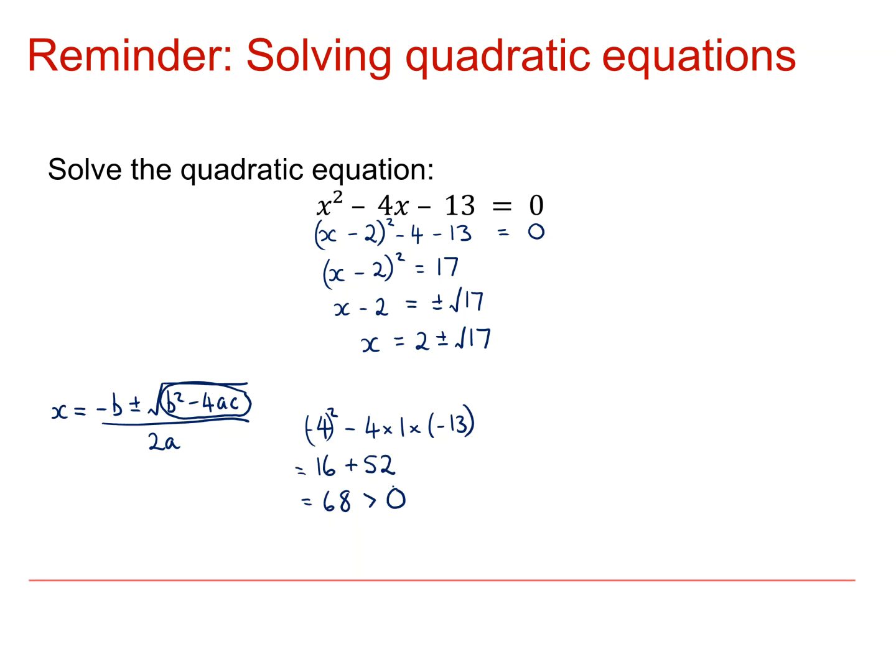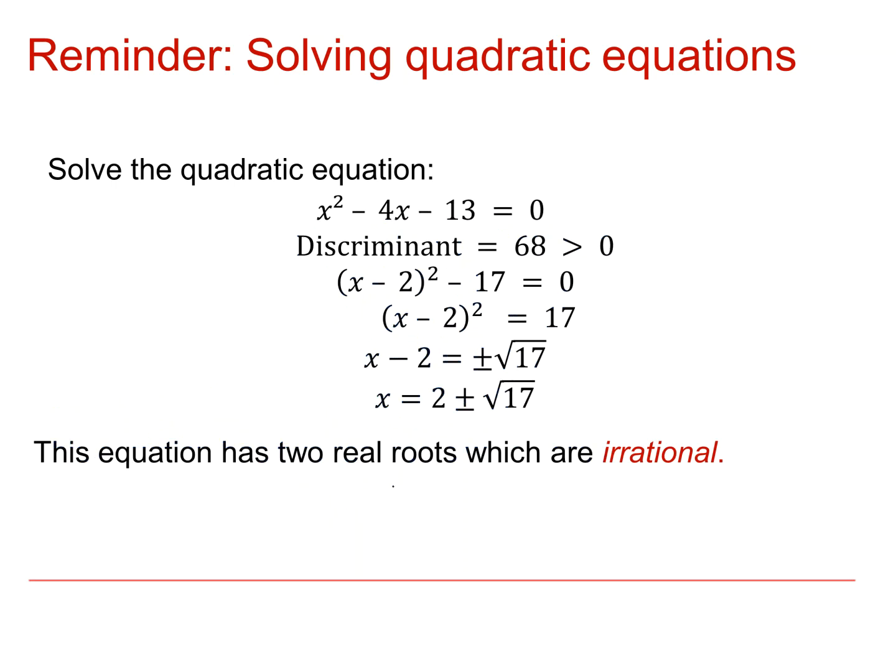So if we were using the formula, we'd find that we could square root the discriminant OK. So with this quadratic equation, we still get two real roots, but they're both irrational because the square root of 17 is an irrational number.